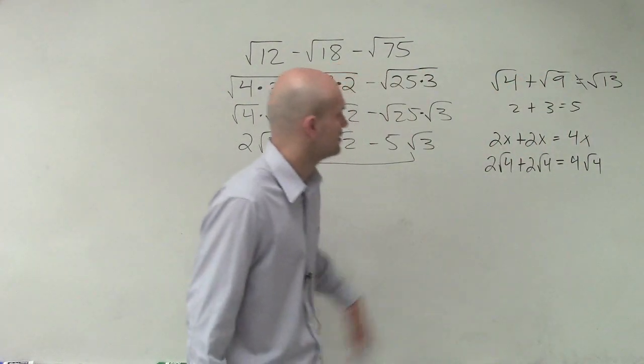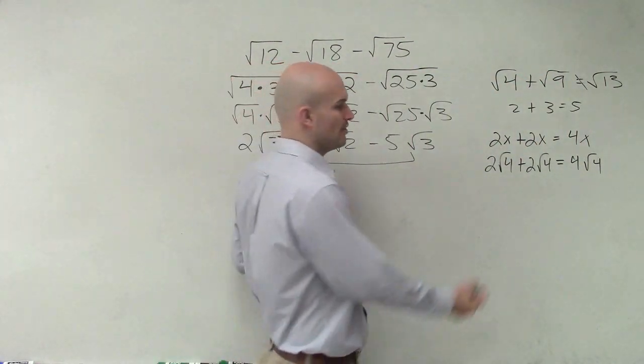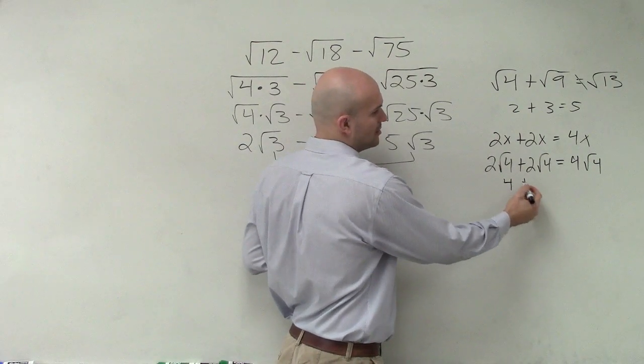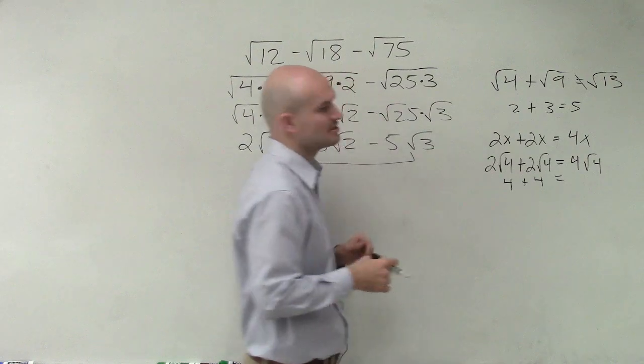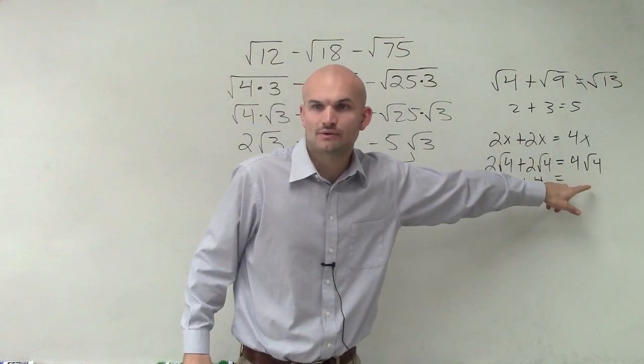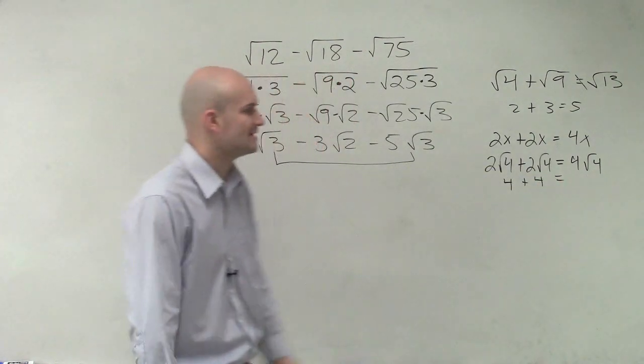And let's prove that real quick. What is the square root of 4? 2. 2 times 2 is 4 plus 4 equals, so that's going to be 8, is equal to 4 times the square root of 4. Is that also equal 8? Yes. So you can see that that works.